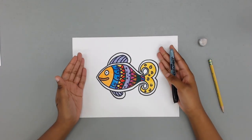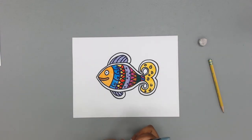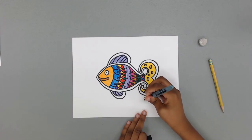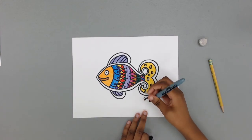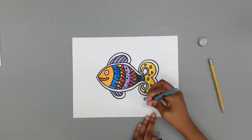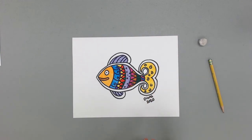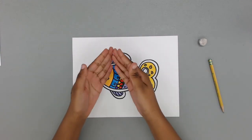And now you're done with your Madhubani Folk Art Fish. Don't forget to sign your name next to your fish. Make sure you write the year. And you're done! Great work!